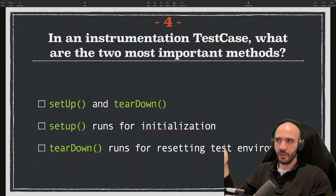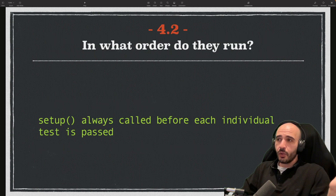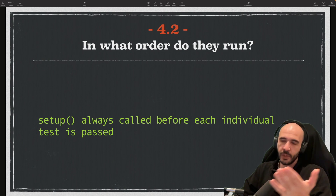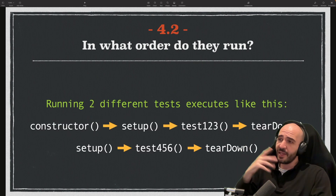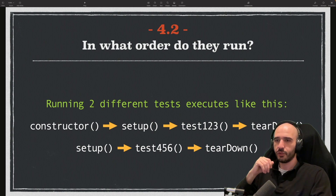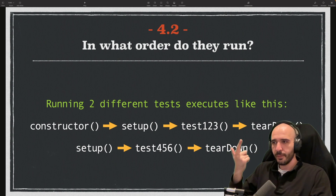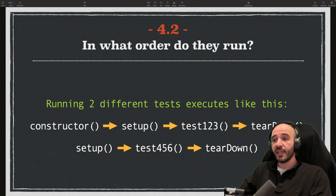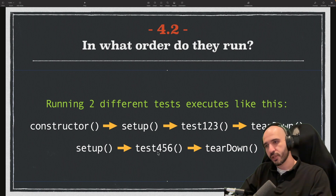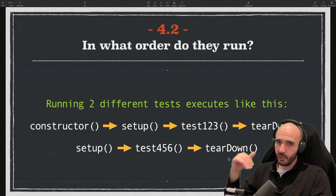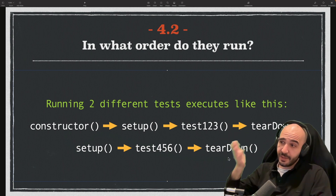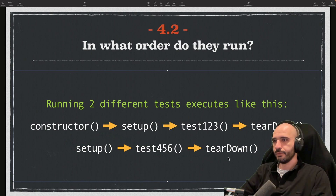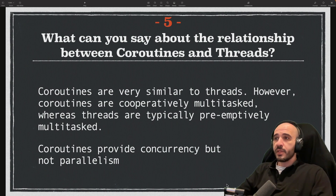Follow-up: in what order do these methods run? Setup is always called before each individual test. If we run two tests, the execution order is: constructor, then setup, then the test, then teardown. For the second test: setup, the test, then teardown — no constructor again. Answering this correctly would really show that you know your stuff.